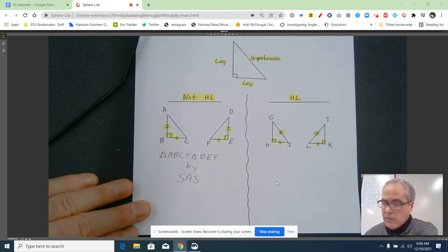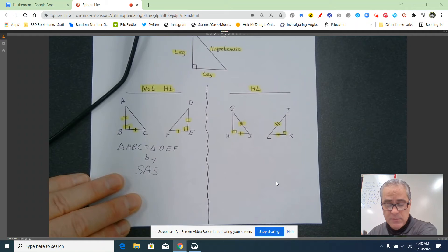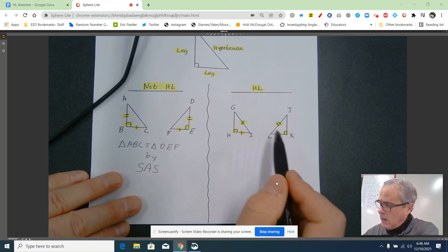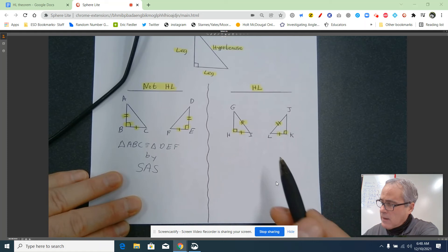Now let's look at one that is hypotenuse-leg: two right triangles, check. They have to be right triangles—don't use HL on something that's not a right triangle. Are the hypotenuses congruent? Those are the sides opposite the right angles. Yes, they're double tick-marked. Do you have at least one pair of legs marked congruent? We do. These are the legs because they're not the hypotenuse. So this is an HL situation. You can show these two triangles are congruent by the hypotenuse-leg theorem.